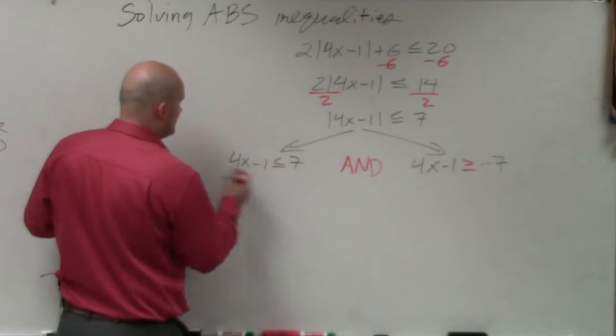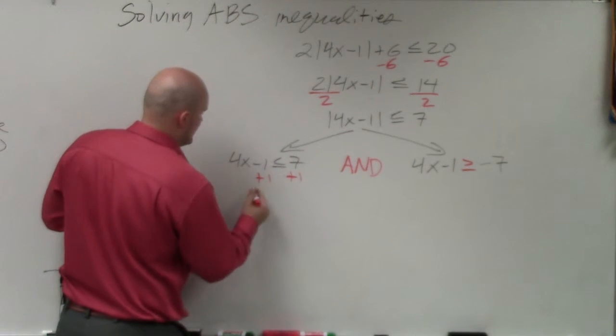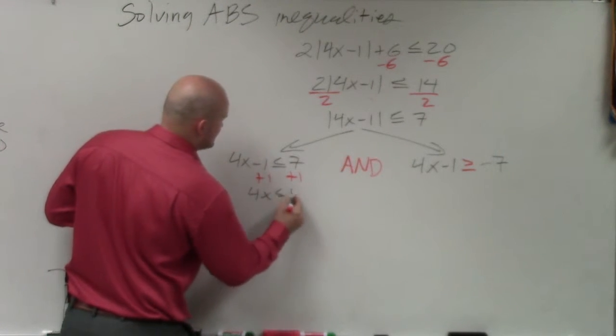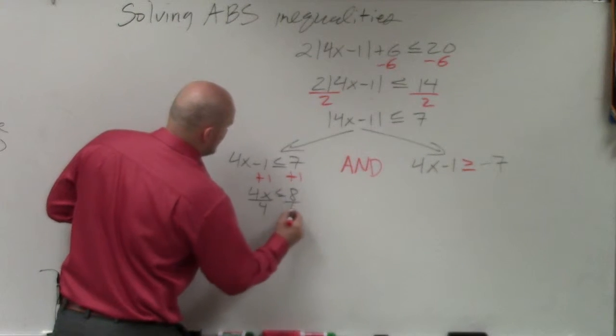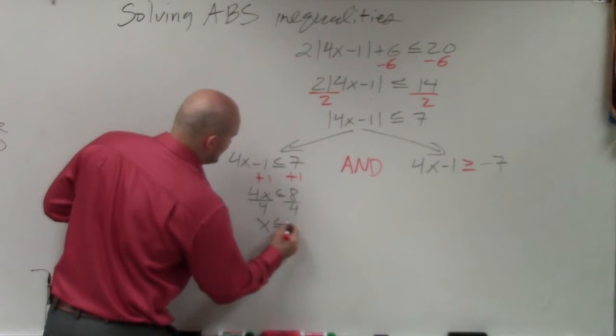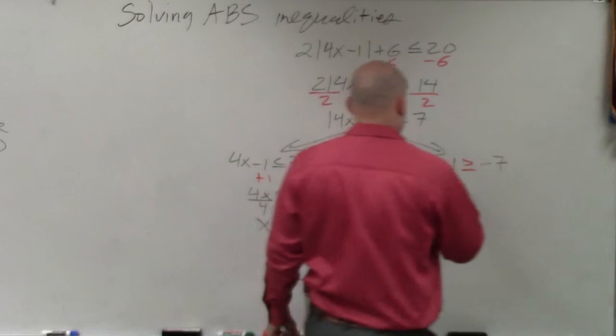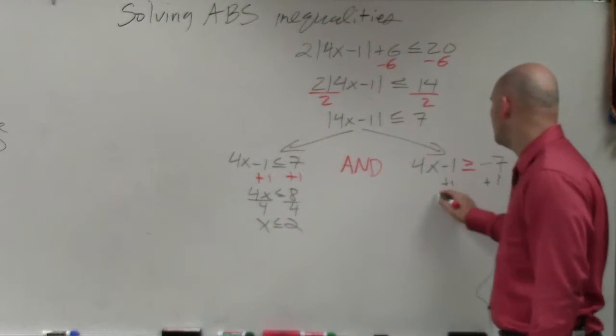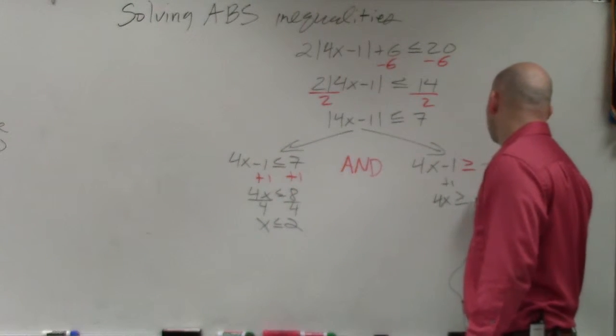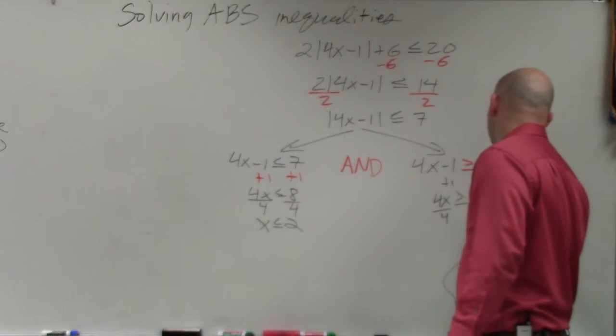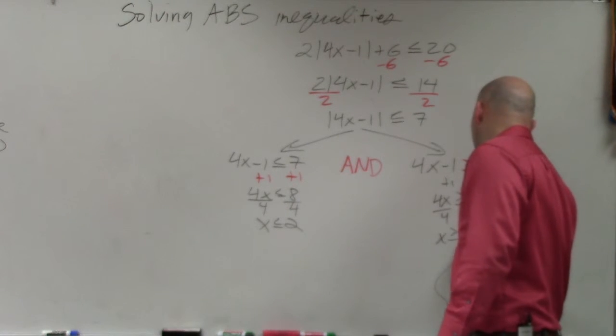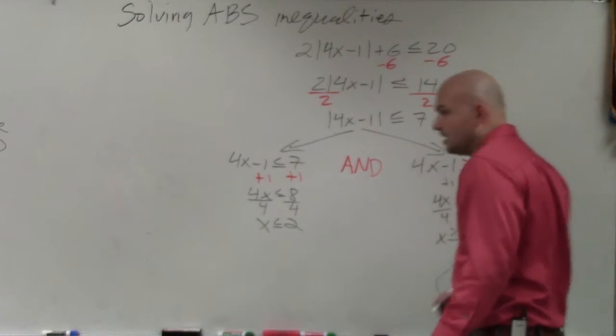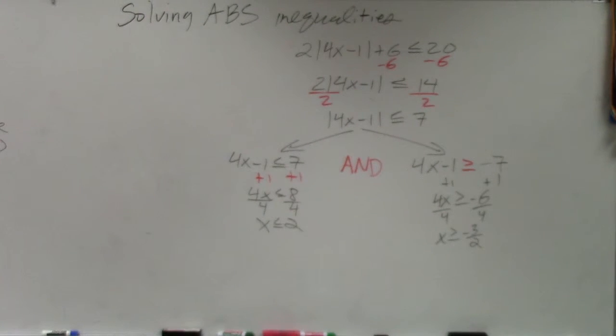All right, so now we just go ahead and solve. So I add 1, so I have 4x is less than or equal to 8. Divide by 4, x is less than or equal to 2. Over here, I add 1, add 1. 4x is greater or equal to negative 6. Divide by 4, divide by 4. x is greater or equal to negative 3 halves. All I did was I reduced the fraction.